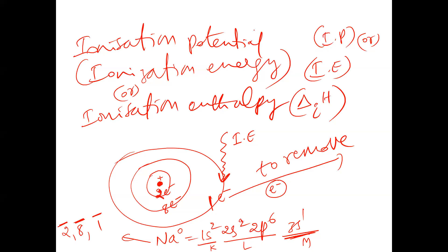In the previous class we discussed about the variation of atomic radius in a period and group — from top to bottom in a group, from left to right in a period. Today we are discussing the variation of ionization potential from left to right in a period and from top to bottom in a group.